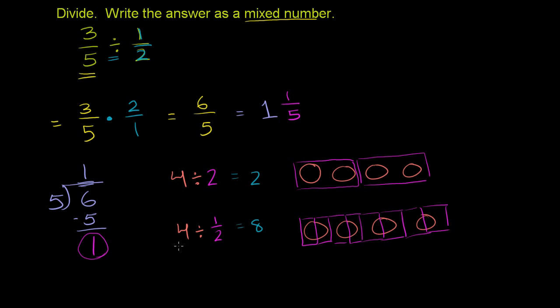And notice, now each of the objects became two groups. So you could say, how many groups do you have? Well, you have four objects. And each of them became two groups. And so you also have eight. So dividing by 1 half is the same thing as multiplying by 2. And you could think about it with other numbers. But hopefully that gives you a little bit of an intuition.